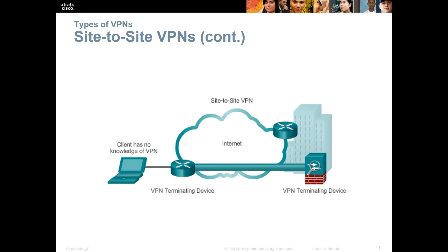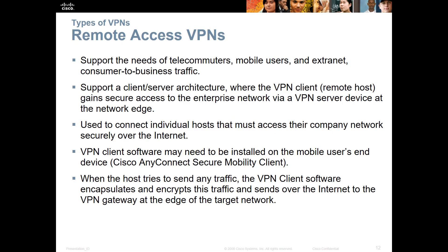Here is an example of a site-to-site VPN — a laptop going through the internet back to a corporate network. The problem with site-to-site is that the source and destination need to have static addresses. What happens when that's not feasible? What happens when you have a mobile workforce logging in from anywhere? That leads us to the next section: remote access VPNs, which are very similar to a site-to-site VPN except it's a mobile site VPN.